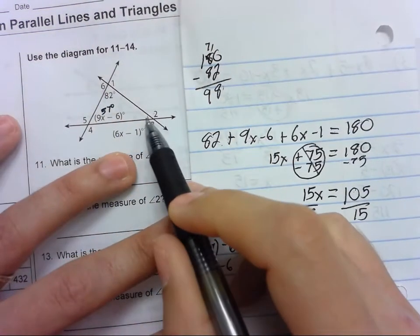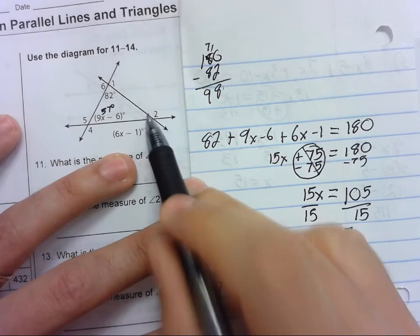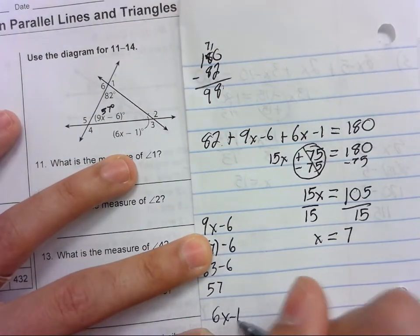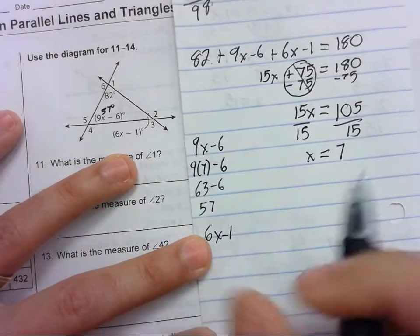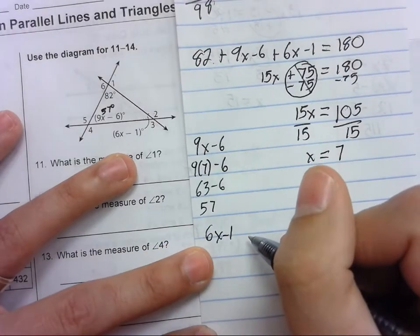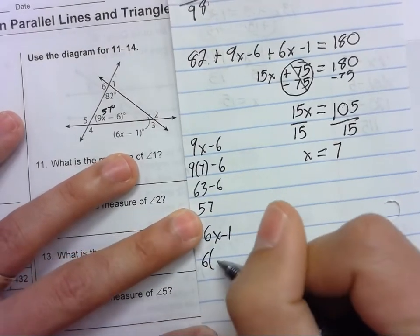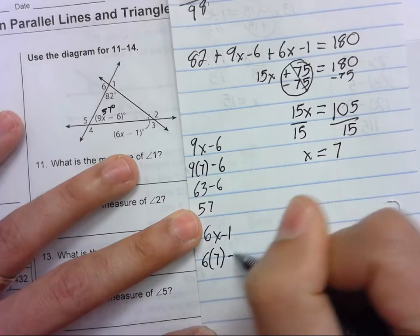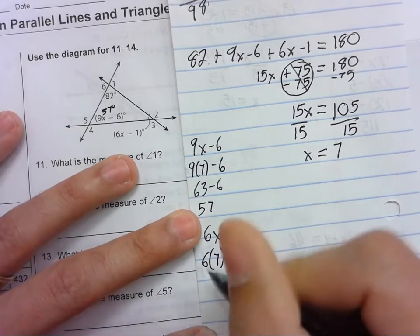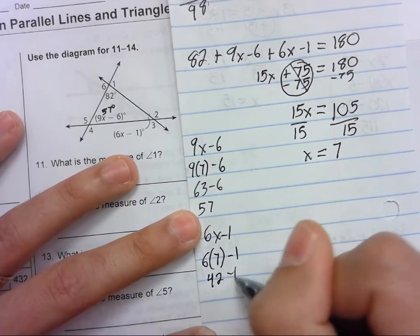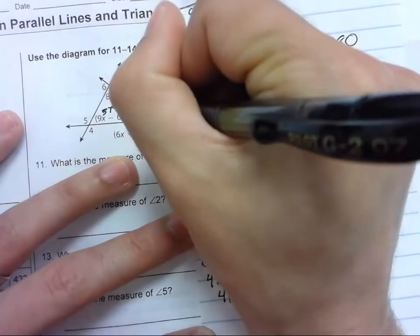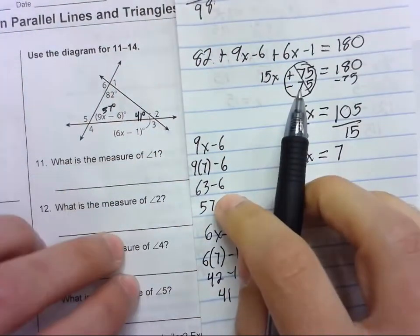And let's go for this last angle. 6x minus 1, and x equals 7. 6 times 7 is 42 minus 1. This angle is 41 degrees. Okay.